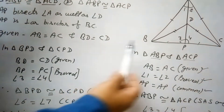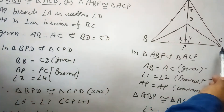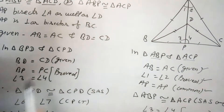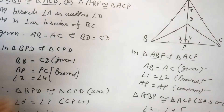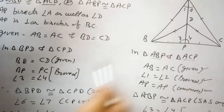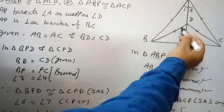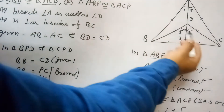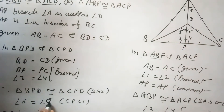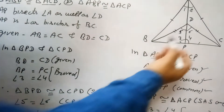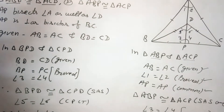Now in triangles BPD and CPD: BD equals DC (given), BP equals CP (proved in the second part), and angle 3 equals angle 4 (also proved in the second part). By these three conditions the two triangles are congruent, and therefore angle 5 equals angle 6, which means DP bisects angle BDC.